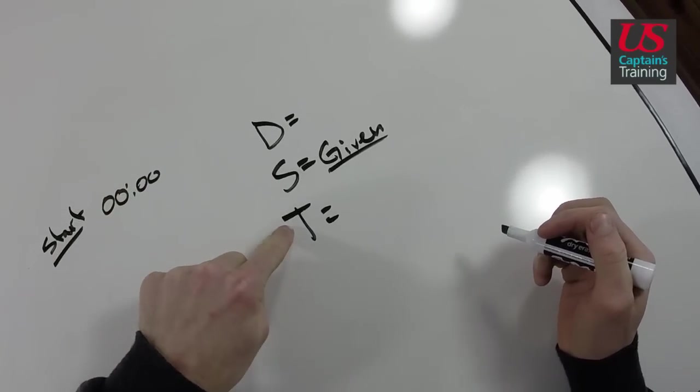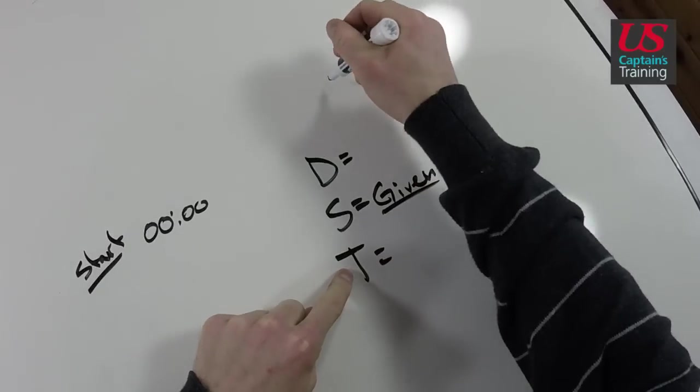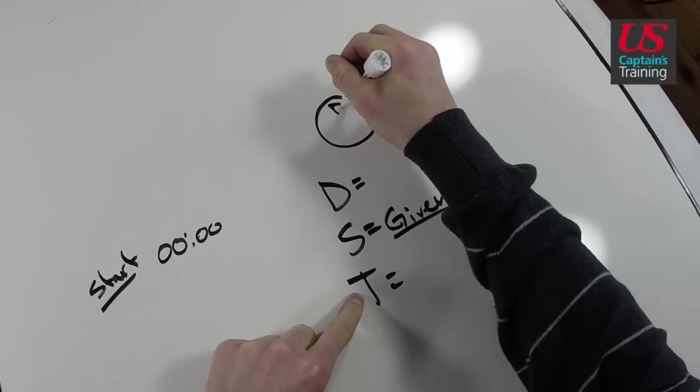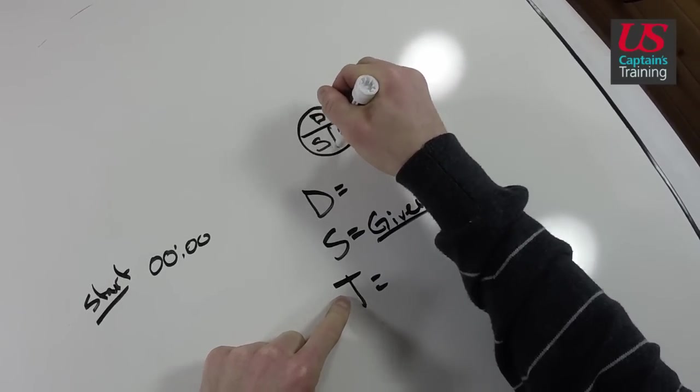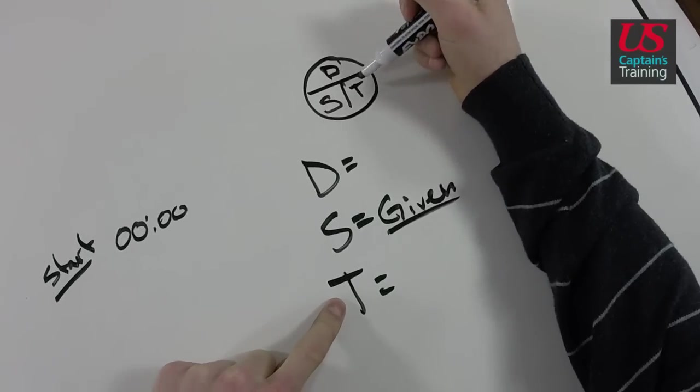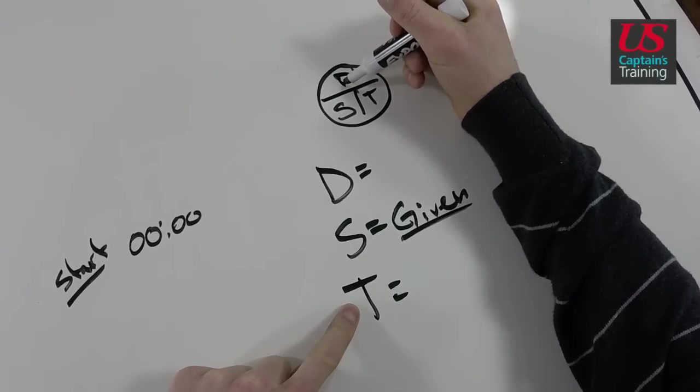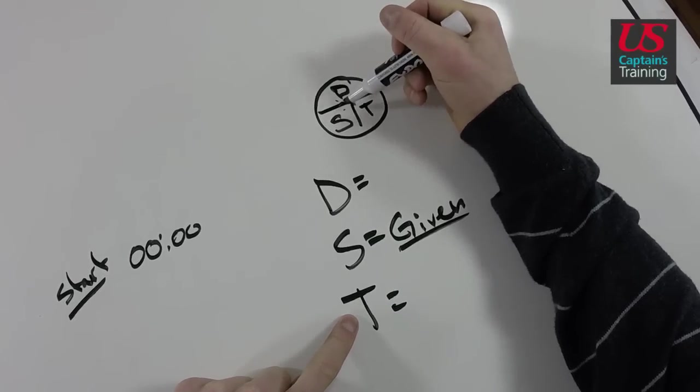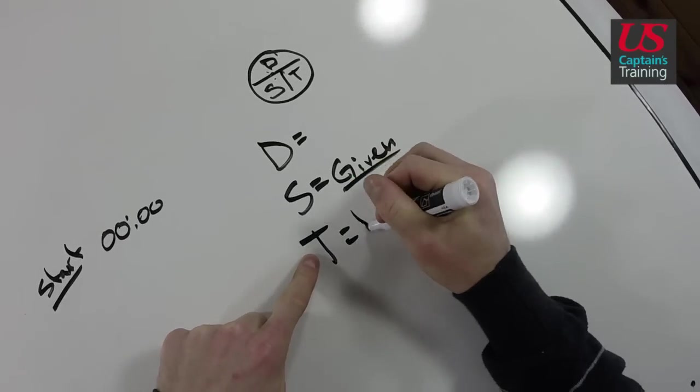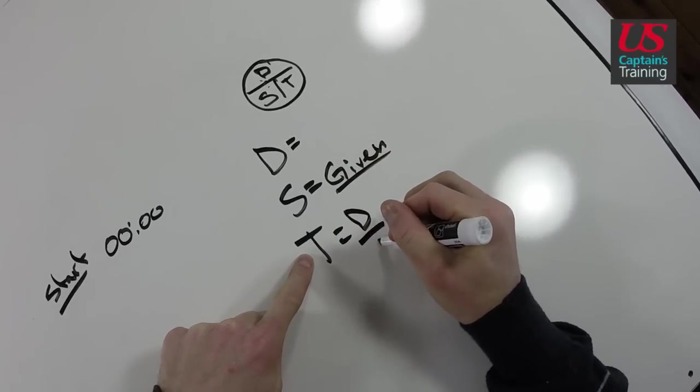So now we have distance, speed, and time. We need to find time. If we do our memory aid here: distance, speed, and time. To find time, it's equal to distance divided by speed. So time equals distance divided by speed.